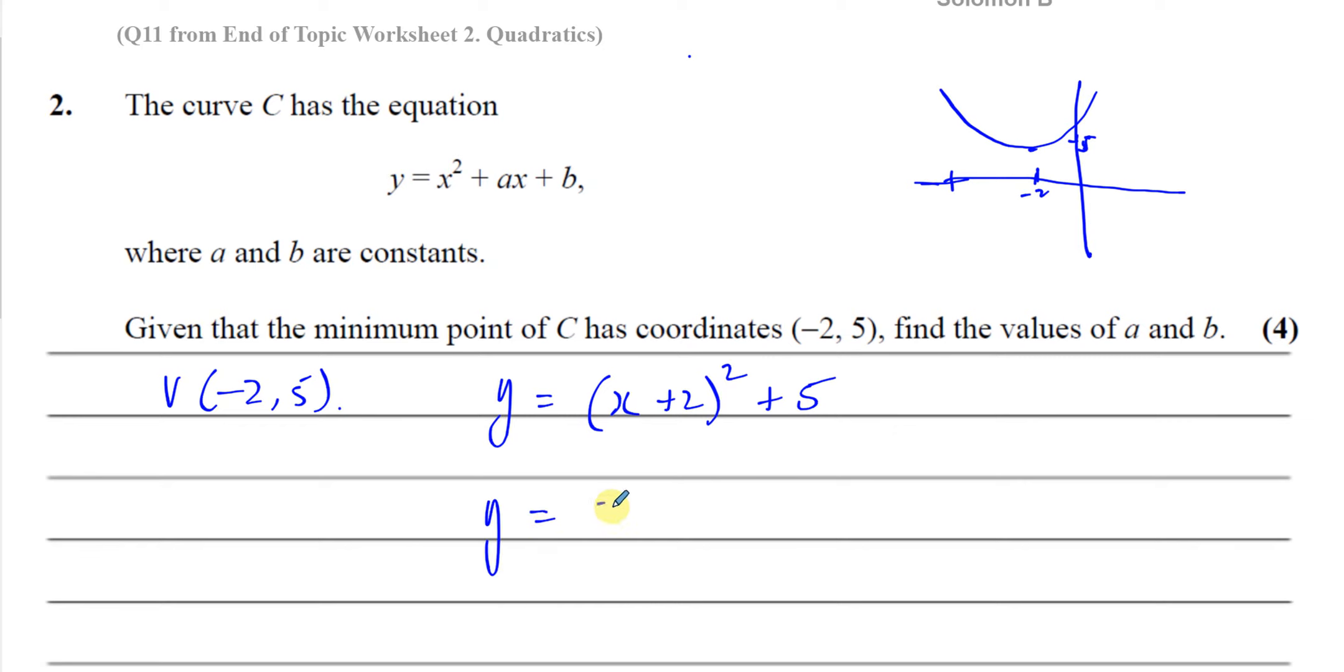So this is y equals x squared plus 4x plus 4 plus 5. So you have y equals x squared plus 4x plus 9. Simple as that. That's the answer to this question.